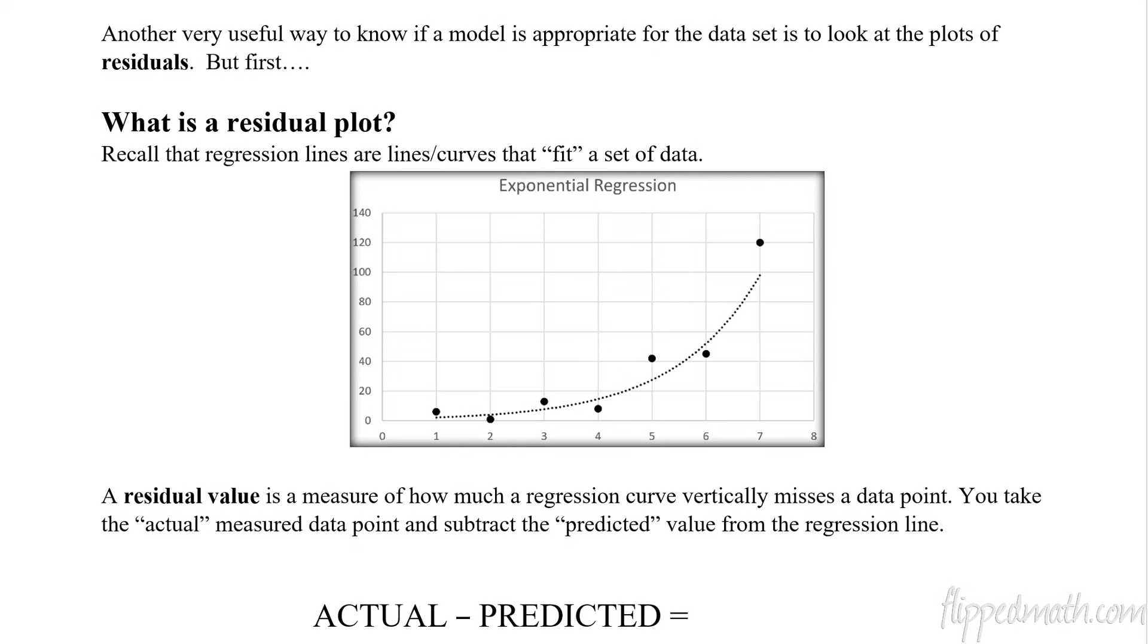Another useful way is this thing called residuals. When we look at the residuals, they can help us know if a model is appropriate or not. So what is a residual plot? First of all, let's remember some things we've already been doing, which is with a regression line or a regression curve that fits the data. So here we have a few different data points, and this dotted line is a regression curve. It's an exponential curve for this data set.